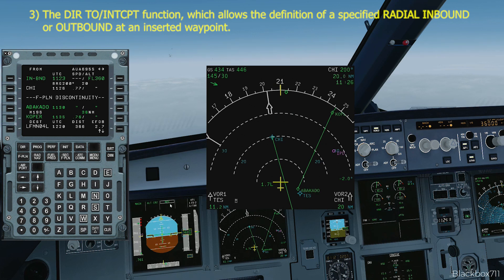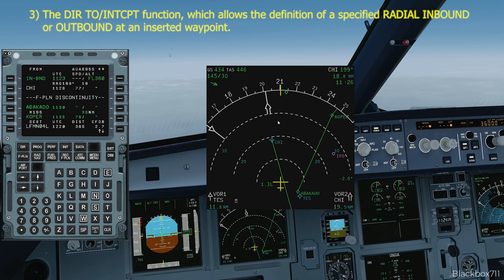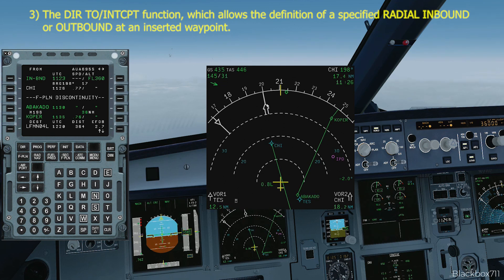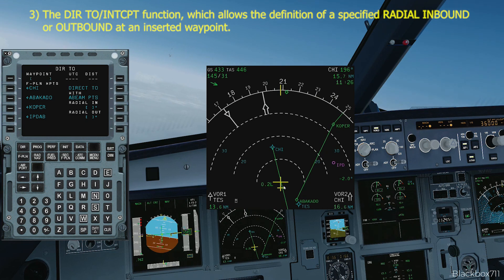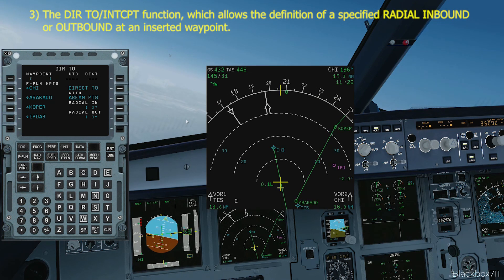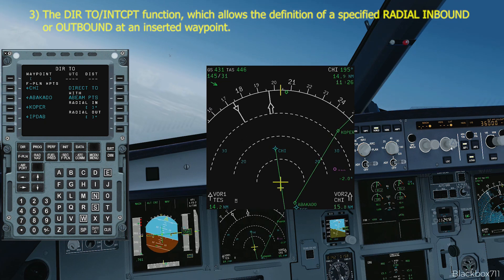On the primary flight display we now have a blue NAV mode showing up, meaning we're still in heading active mode but NAV is armed. Once we reach the intercept point, NAV mode will become active and the aircraft will follow the 015 radial inbound — i.e. course 195 — to Charlie Hotel India. NAV mode has now become active; the aircraft starts to bank and fly onto that radial. The important thing is that we put in radial inbound because we want to intercept inbound to Charlie Hotel India.